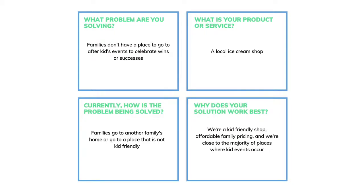Step three — how is the problem being solved currently? Families go to another family's home or a place that isn't kid-friendly, like a brewery. That family might not even want all those people over all the time. Step four — why does our solution work best? We'll be a kid-friendly shop with affordable family pricing, located close to where kids' events occur — soccer fields, elementary schools, minor league baseball stadiums. Wherever families are, that's where we want to be, so we can be that local spot.